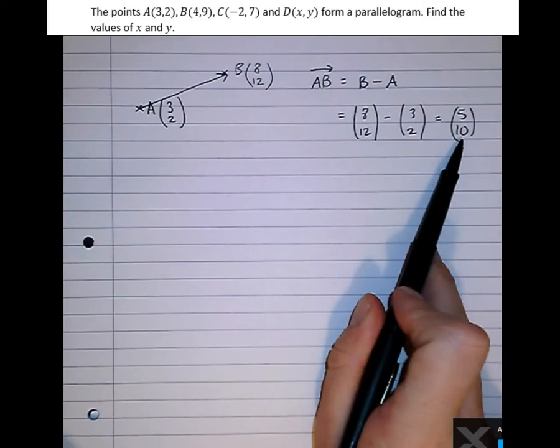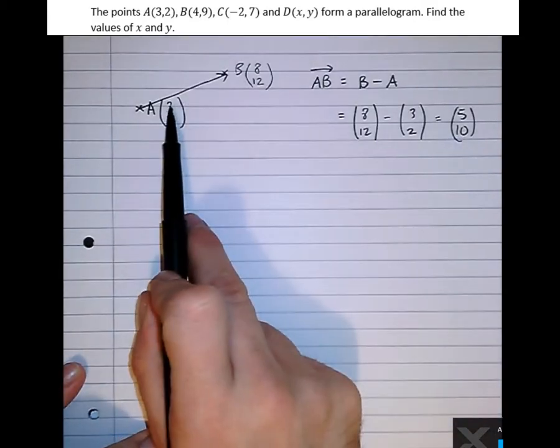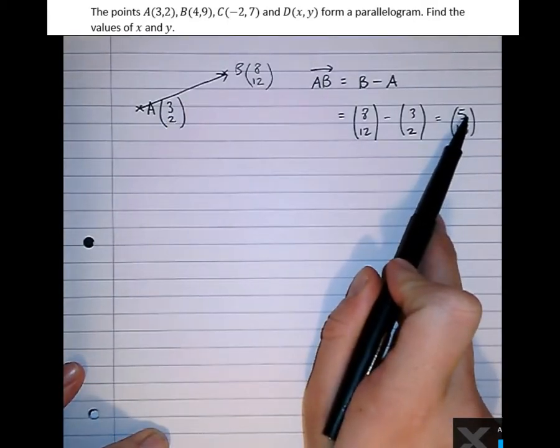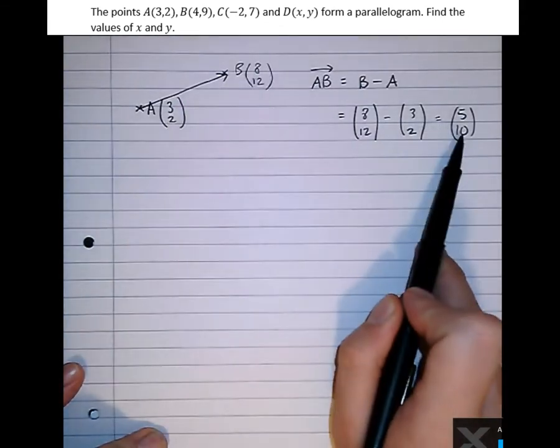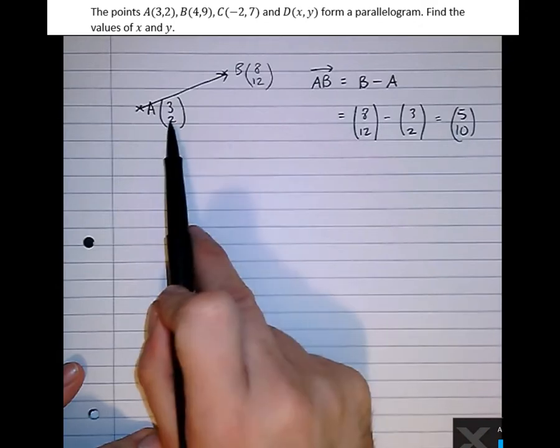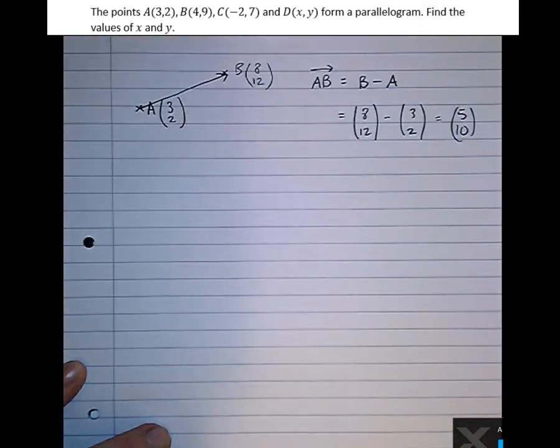Now let's just check if this is right. So this says to get from A to B we need to travel 5 in the x direction. Well yes, 3 plus 5 is 8. And 10 in the y direction, 2 plus 10 is 12. So that's correct.